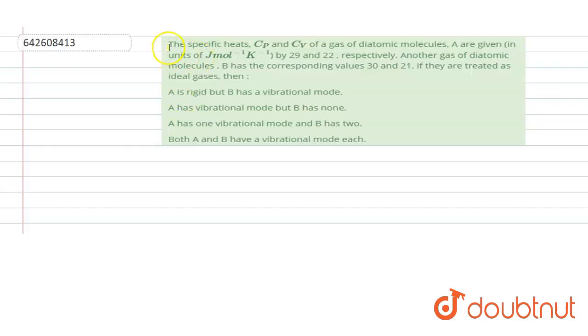Hello, the problem states that the specific heat capacity Cp and Cv of a gas of diatomic molecule A given in the units of joule per mole per kelvin are 29 and 22 respectively. Another gas of diatomic molecule B has the corresponding values 30 and 21 respectively. If they are treated as ideal gas, we have to check the options.